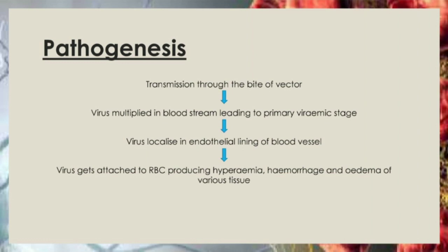Following transmission through the bite of the vector, the virus multiplies in the bloodstream and leads to a primary viraemic stage. The virus then localizes in the endothelial lining of the blood vessels. During the viraemic stage, the virus gets attached to the red blood cells, producing hyperemia, hemorrhage, and edema of various tissues.